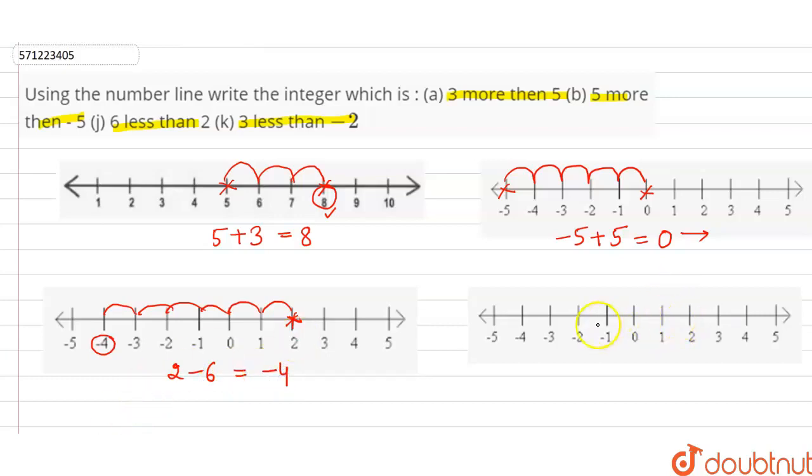Now, last part is 3 less than minus 2. This is minus 2. Less means we have to transfer to the left hand side by 3 places. So 1, 2, 3. So our integer is minus 5 and verification is minus 2 minus 3, so minus 2 minus 3 is minus 5.